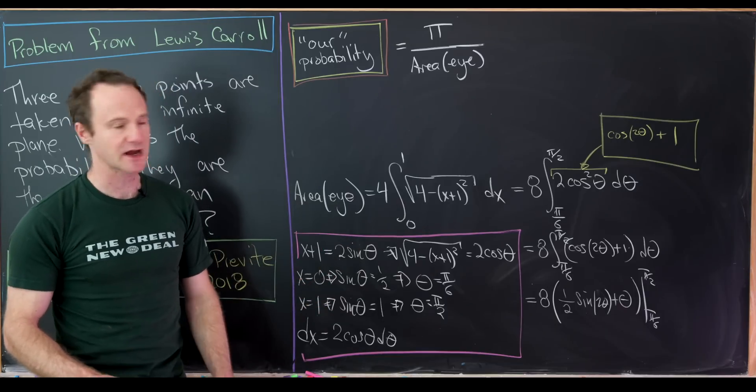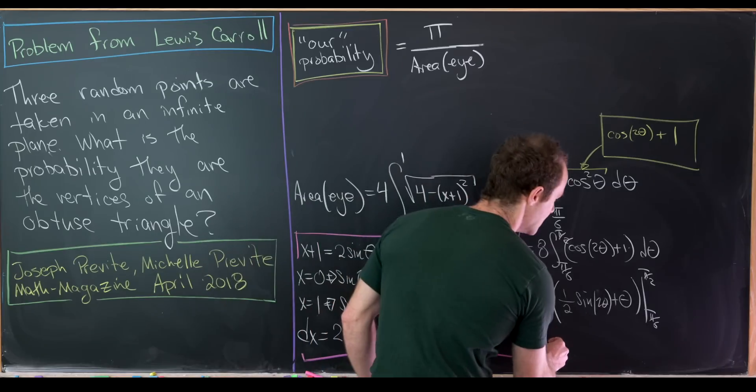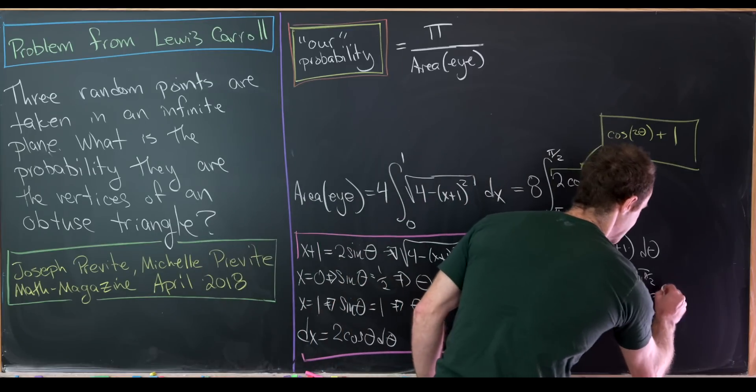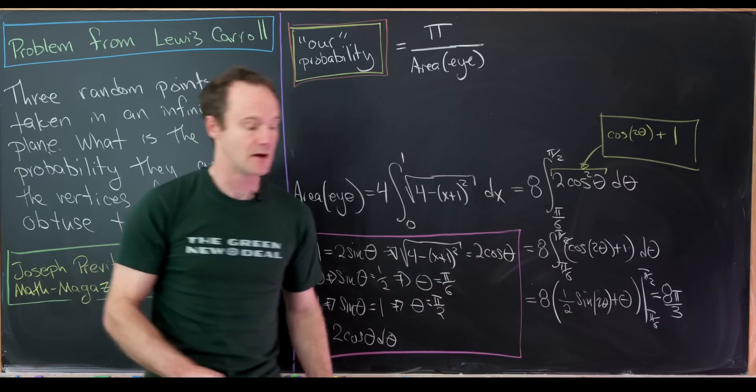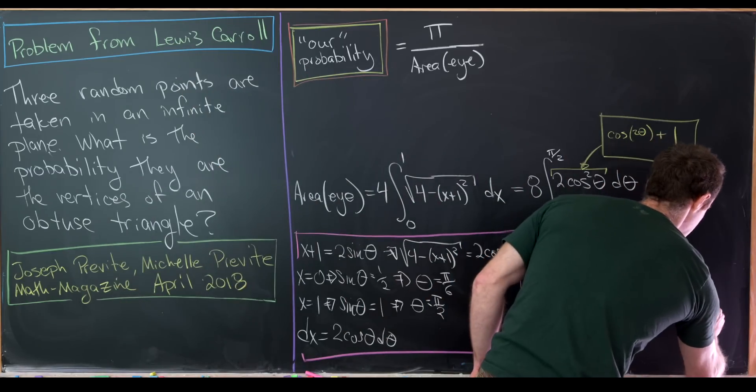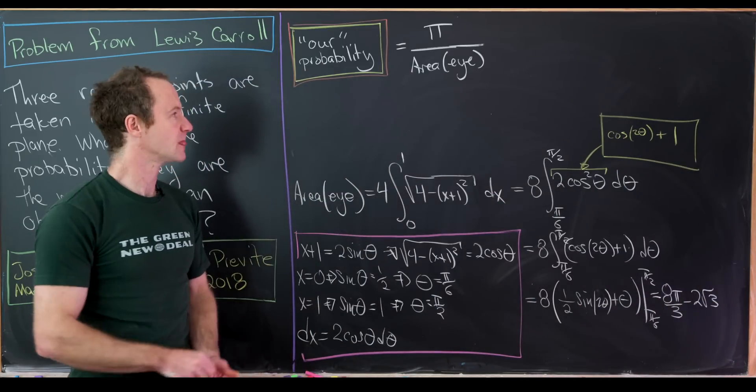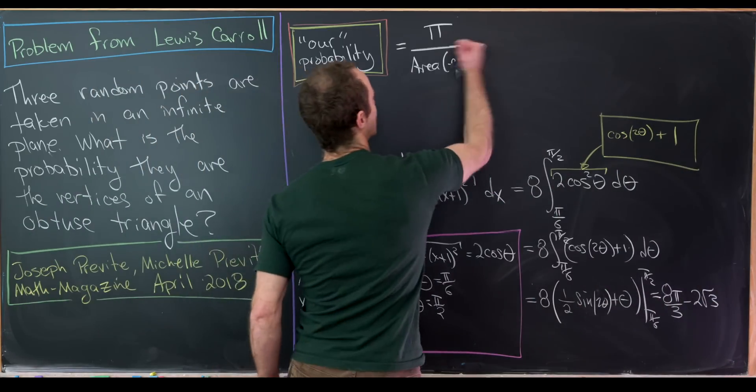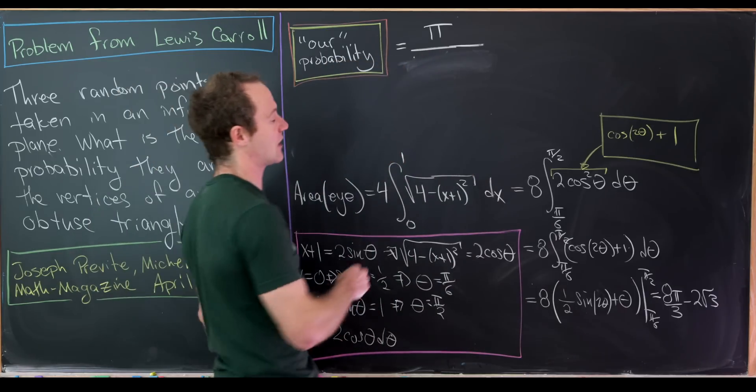But from here, that's just plugging numbers in and doing a little bit of arithmetic. I'll let you guys check that. But what you end up with is 8 pi over 3 minus 2 times the square root of 3.